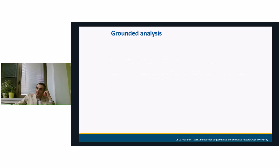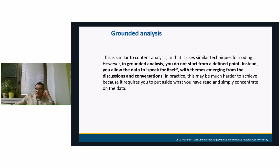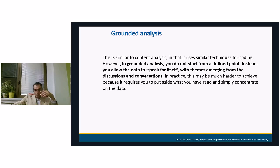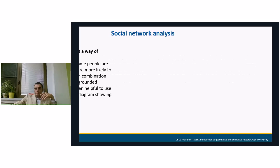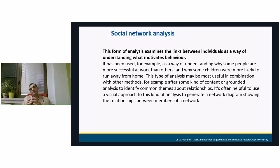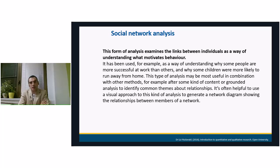The next is grounded analysis, which is similar to content analysis, but as I said at the beginning, you do not start from a theory. You just start digging the data, you allow the data to speak for themselves, and from what emerges you try to build a theory out of the ground. The theory is very hard to achieve because it requires that you set aside everything you have read so far and concentrate on the data. Social network analysis is used to identify links between respondents or individuals as a way to understand what motivates their behavior — for example, why some people are more successful at work than others, or why some students run away from home.